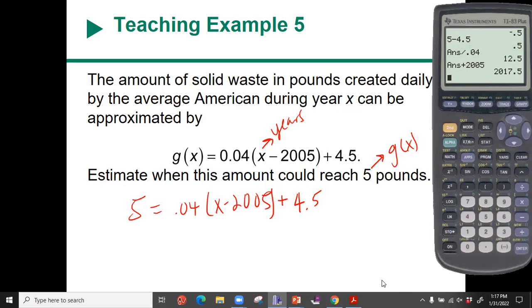And what year did you guys get? Okay, how many of you distributed first? Yeah, I figured you did. The reason why distribution didn't really matter on this one is because it's only one distribution on that side. I subtracted 4.5, then I divided by 0.04 because the inverse operation of multiplying by 0.04 is to divide by 0.04, and then I added 2005 because the inverse operation of subtracting 2005 is to add. So we end up with 2017.